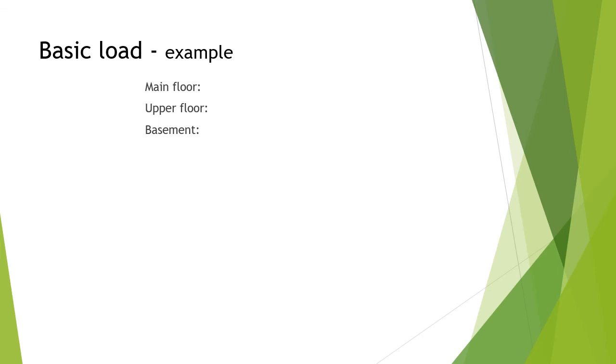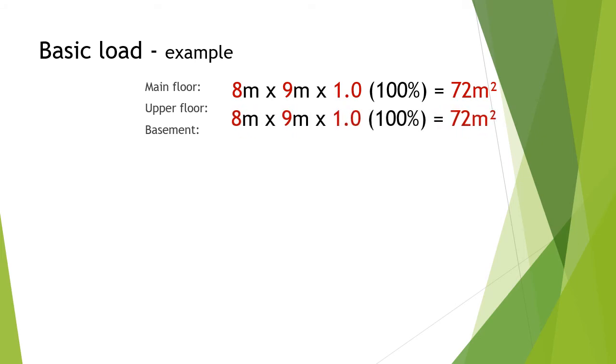For starters, we'll use our main floor, 8 by 9 times 1, or 100%. That's 72 meters squared. Then we'll do the upper floor, 8 by 9 times 1, 72 meters squared.